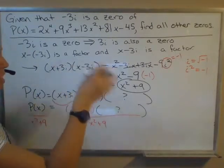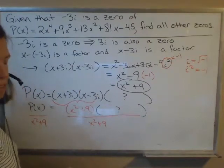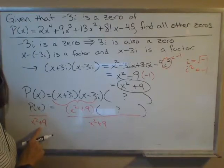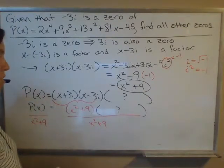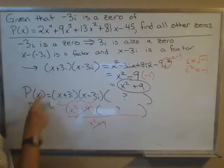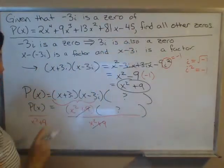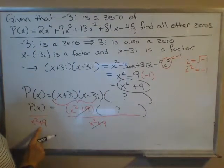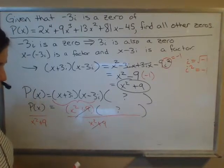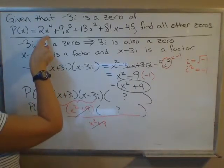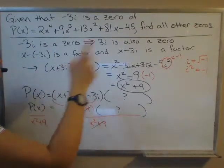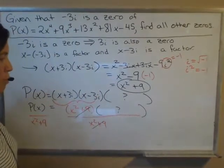That lets you avoid having to do synthetic division with imaginary numbers, which gets maybe a little bit messy. The downside is I'm going to have to use long division because this is degree 2. The upside is you only have to divide once. This should be degree 2, right? Because this is degree 4 originally. If we divide out a quadratic factor, then what we're left with is 2 more degrees.